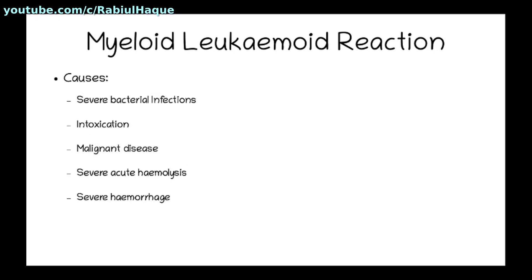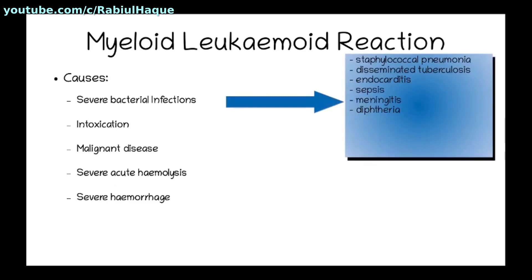What are the causes of myeloid leukemoid reaction? They include severe bacterial infections, intoxication, malignant disease, severe acute hemolysis, severe hemorrhage, etc. The bacterial infections that can result in myeloid leukemoid reaction — very important for multiple choice questions — include staphylococcal pneumonia, disseminated tuberculosis, endocarditis, sepsis, meningitis, diphtheria, etc.